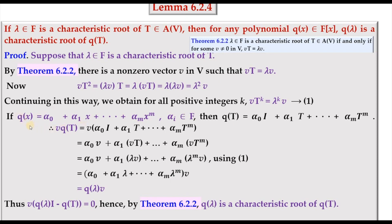For a polynomial q(x) of degree m, say alpha_0 plus alpha_1 x plus ... plus alpha_m x^m with scalars in F, we consider the image of V under q(T). Using the definition of addition in Hom(V,V) and the homomorphism property, and substituting vT^k equals lambda^k v, we take V out using the vector space axiom (alpha plus beta)v equals alpha v plus beta v, getting q(lambda) times v. So the image of V under q(T) is q(lambda) v, and by the criterion theorem, q(lambda) is the characteristic root of q(T).